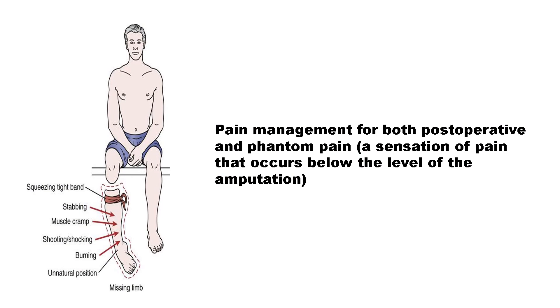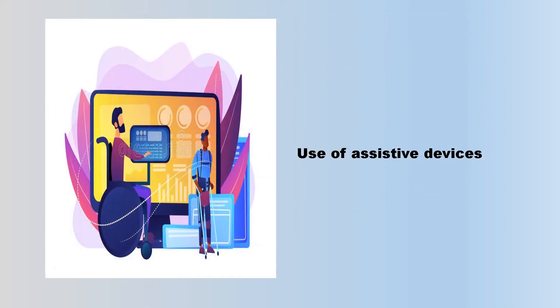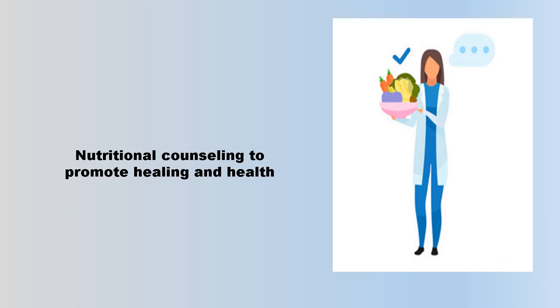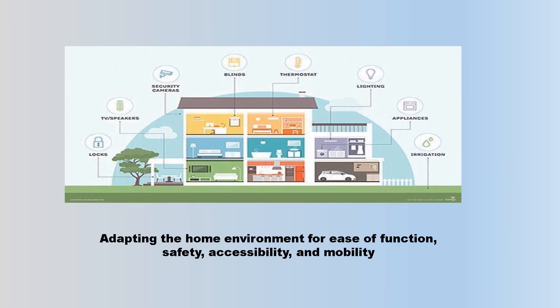The program may also include pain management for both postoperative and phantom pain — the sensation of pain that occurs below the level of the amputation — emotional support to help during the grieving period and readjustment to a new body image, use of assistive devices, nutritional counseling to promote healing and health, vocational counseling, and adapting the home environment for ease of function, safety, accessibility, and mobility.